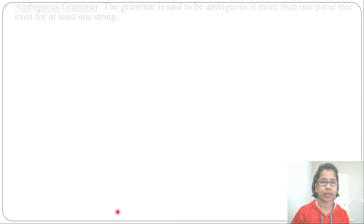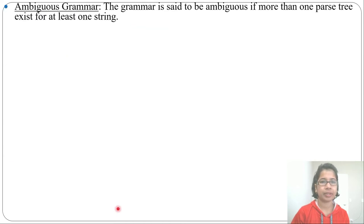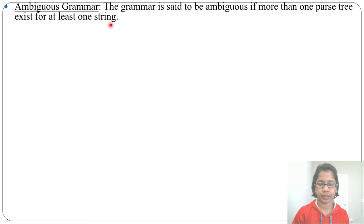Let's discuss what is ambiguous grammar. The grammar is said to be ambiguous if more than one parse tree exists for at least one string.